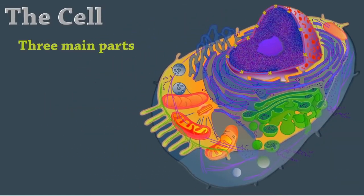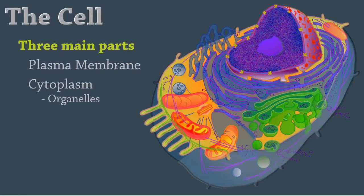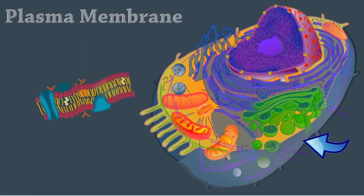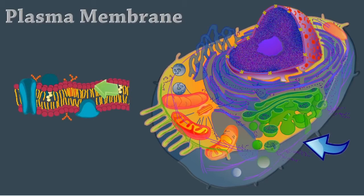All animal cells have three main parts: the plasma or cell membrane, the cytoplasm which contains the organelles, and the nucleus. The plasma membrane encloses the cell.